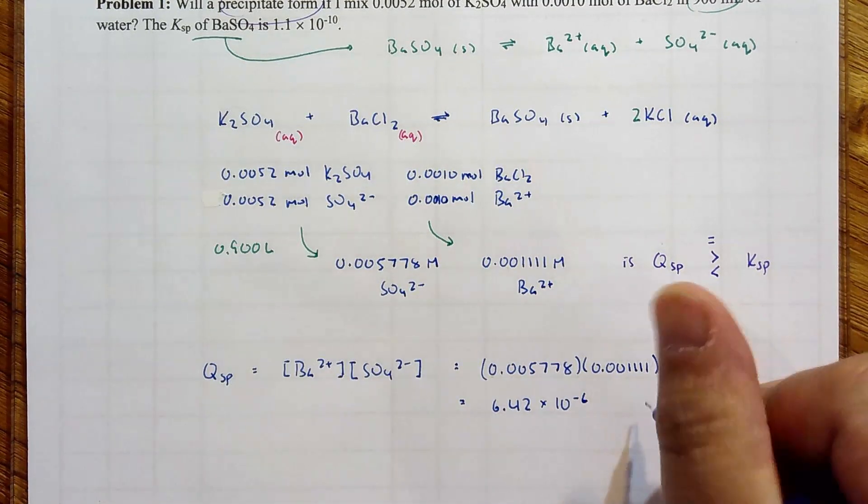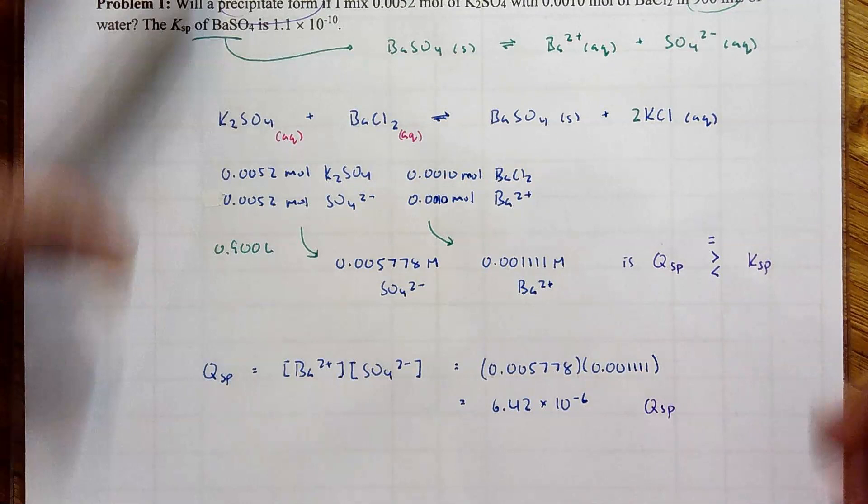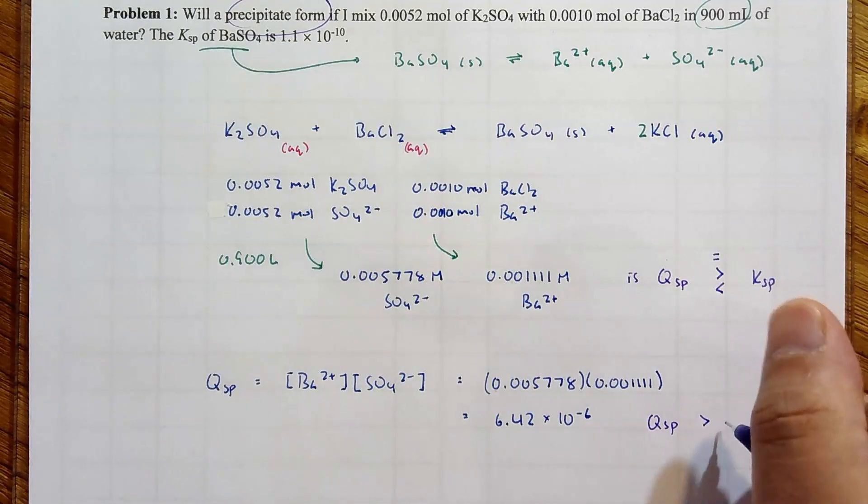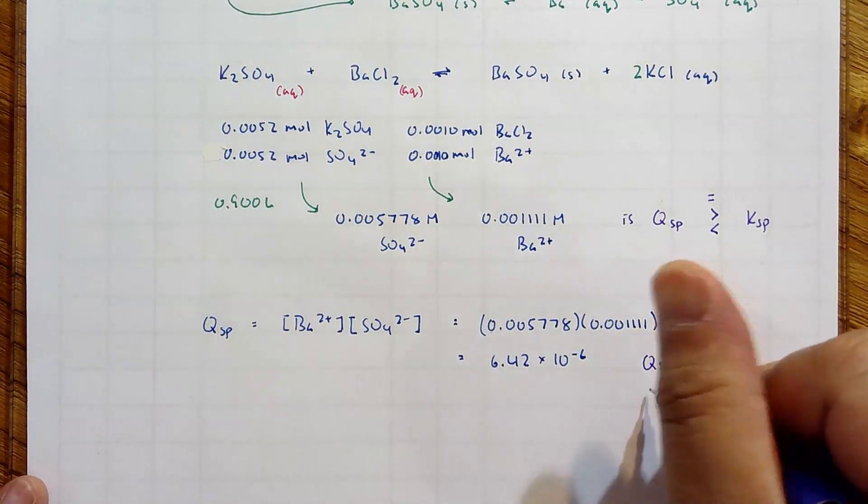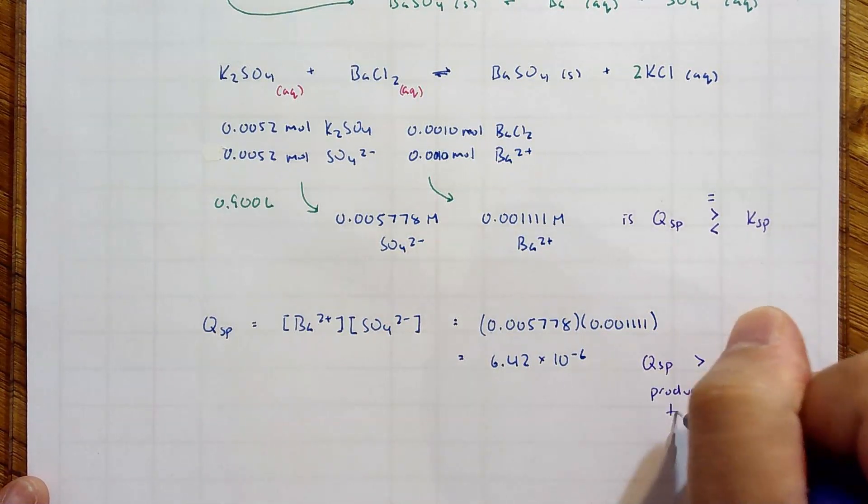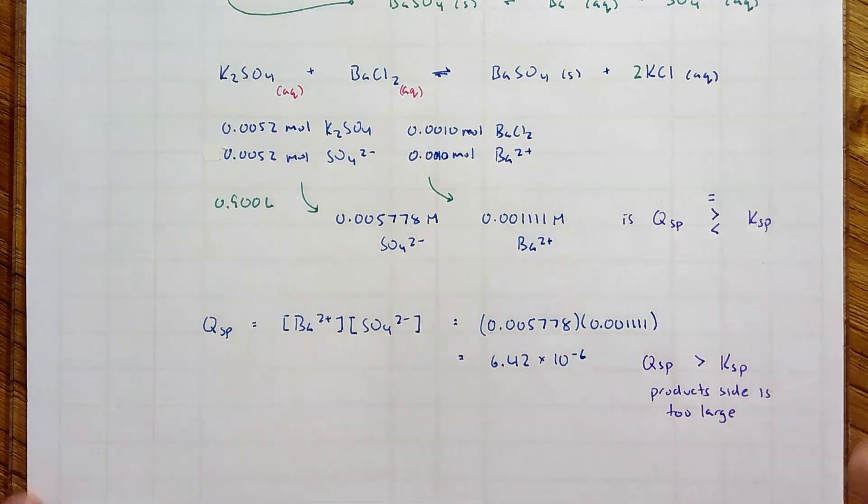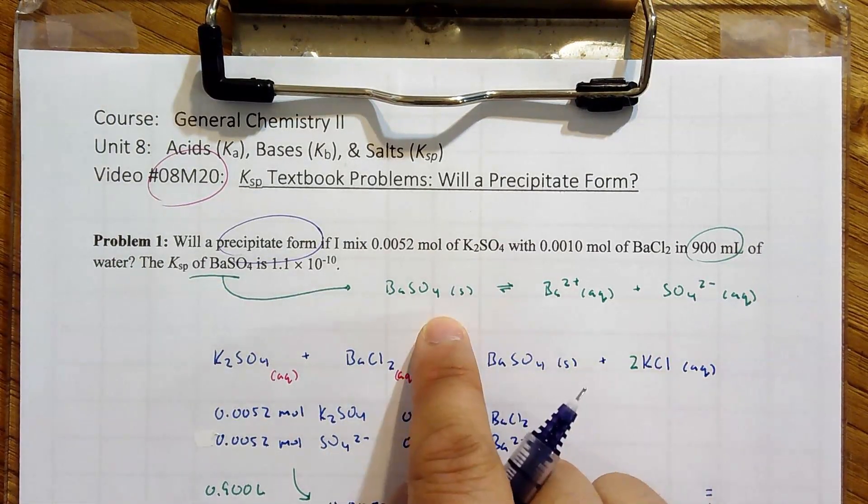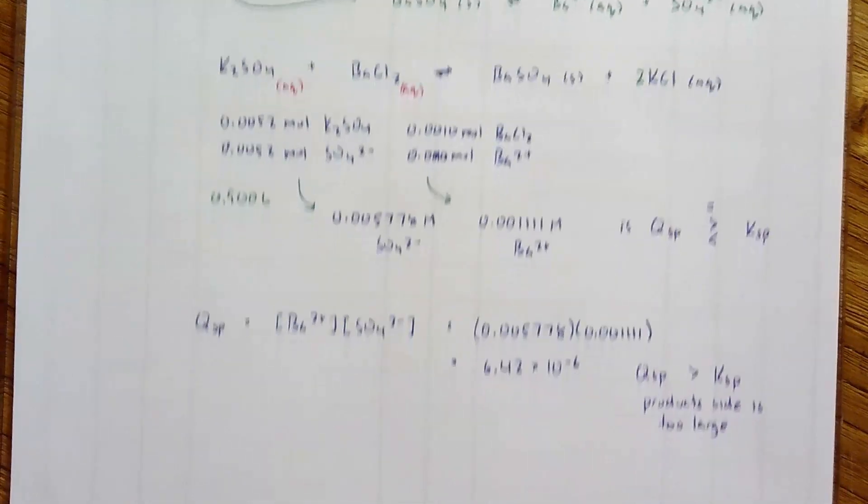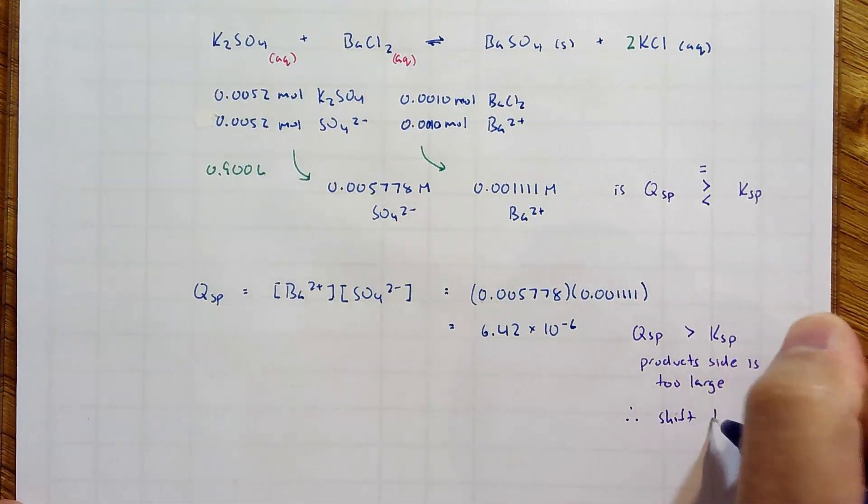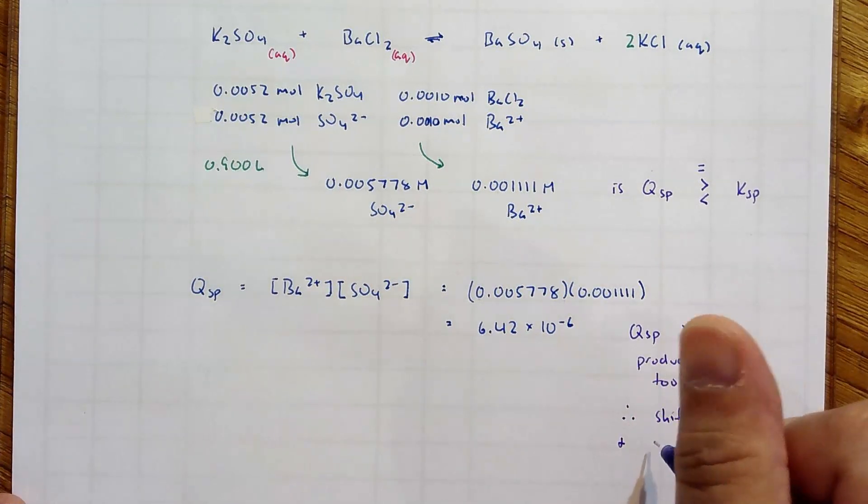Our observation is that Qsp is, so our Ksp for barium sulfate is 1.1 times... it's much, much larger than Ksp. What does that mean? It means that the product side is too large. And if your product side is too large, what happens? You shift to the left. We're shifting towards barium sulfate solid. So our conclusion is, therefore, it will shift to the left. And more importantly, precipitate forms, because that's what the question is asking for.